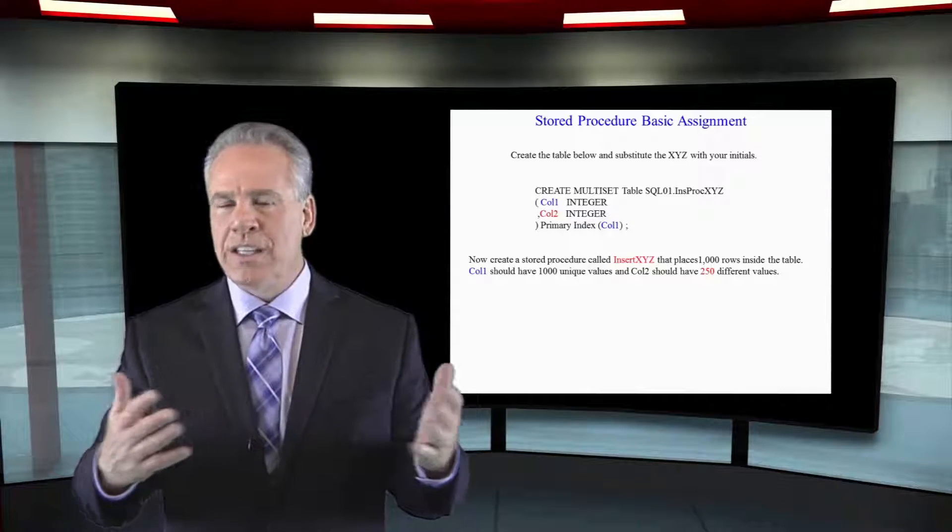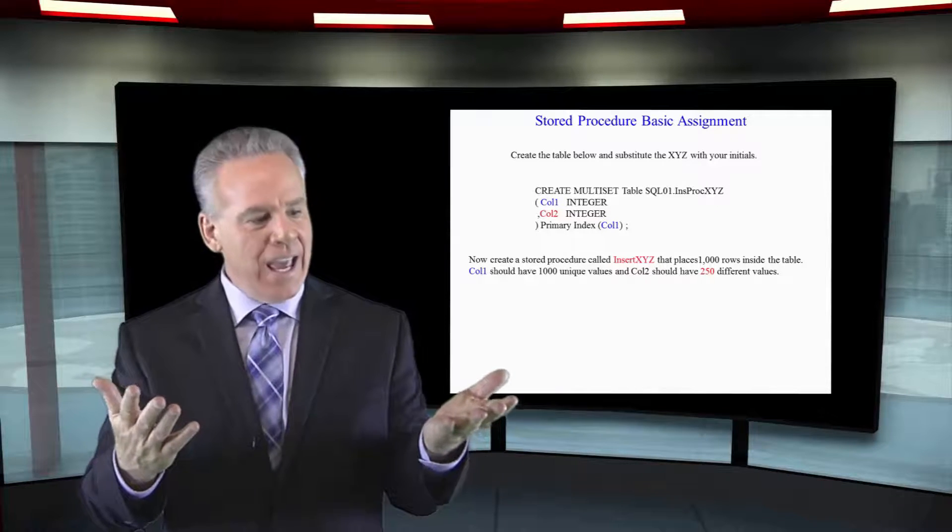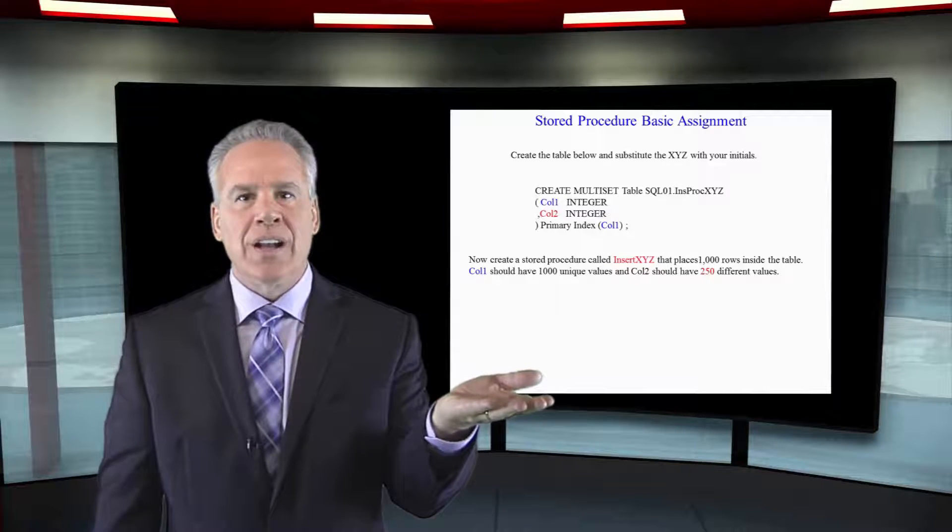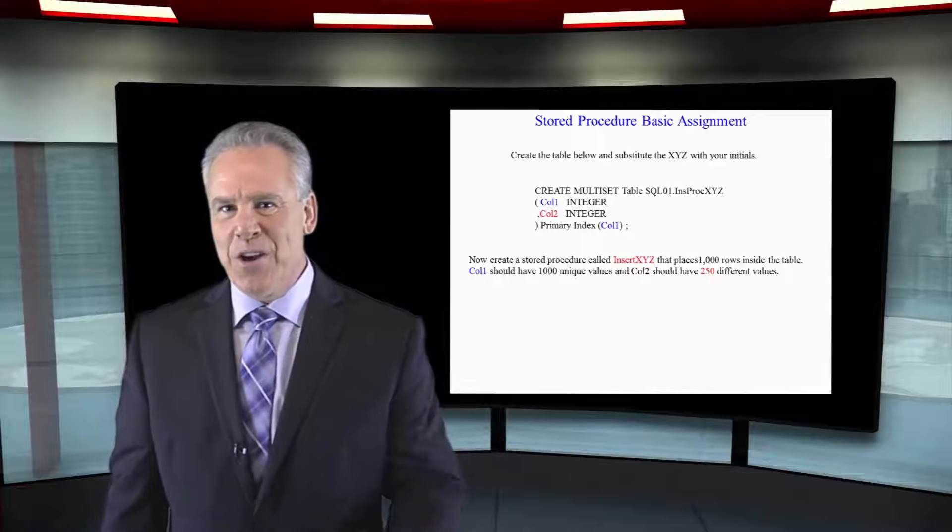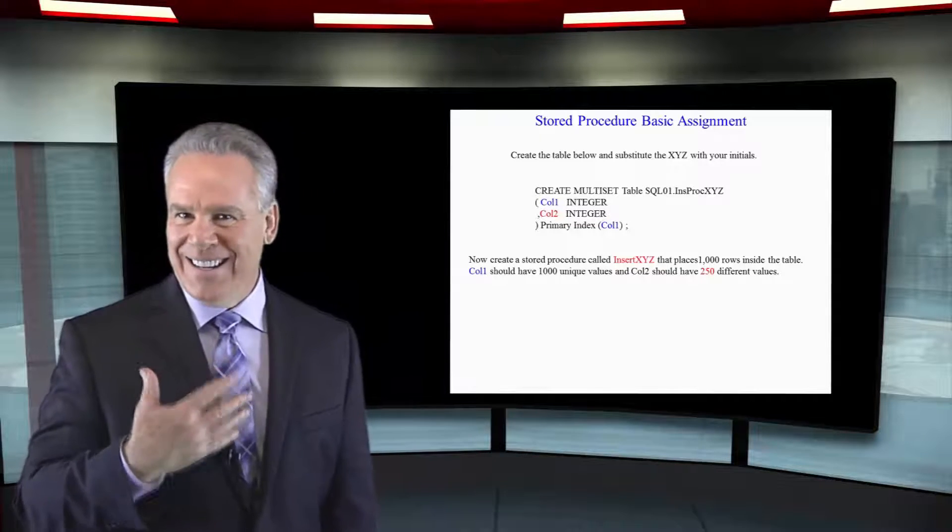So when we look at the table at the end, I will say, hey, it has 1,000 rows. And column one has 1,000 distinct values. Column two has 250 distinct values. Good luck and I will show you the answer on how I did it.